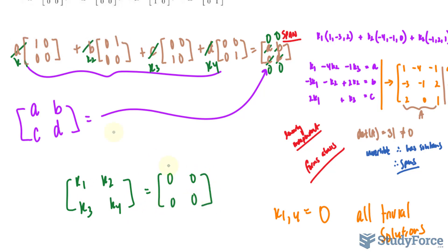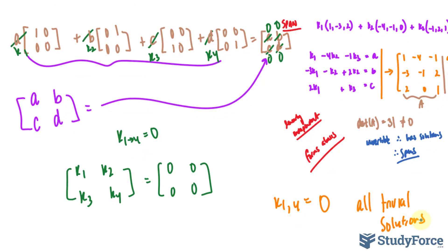The fact that we end up with K sub 1 all the way to sub 4 equaling 0 suggests that we only get trivial solutions. That means it's independent.